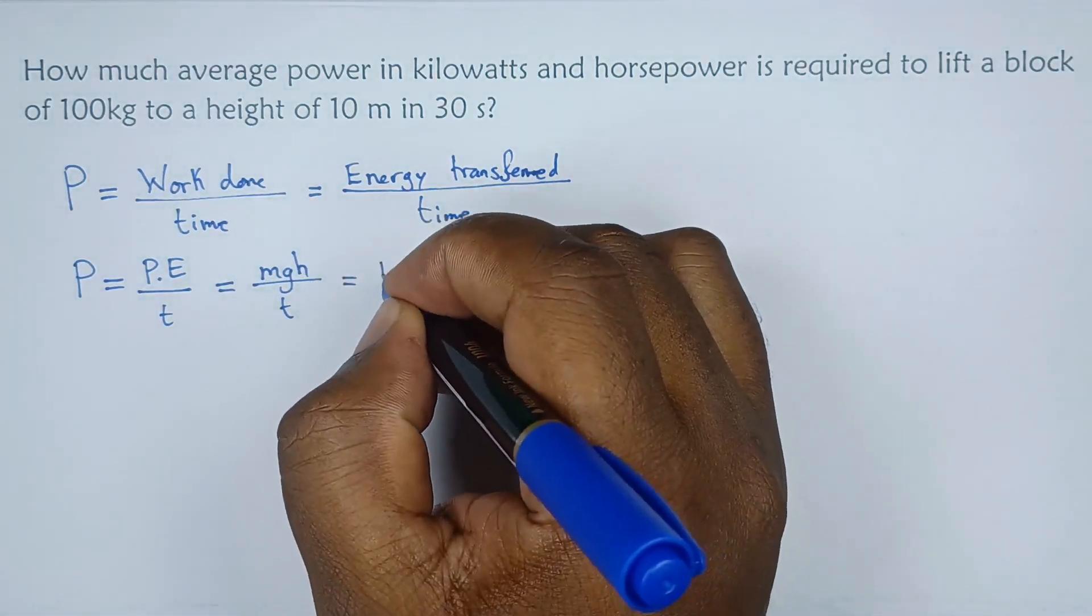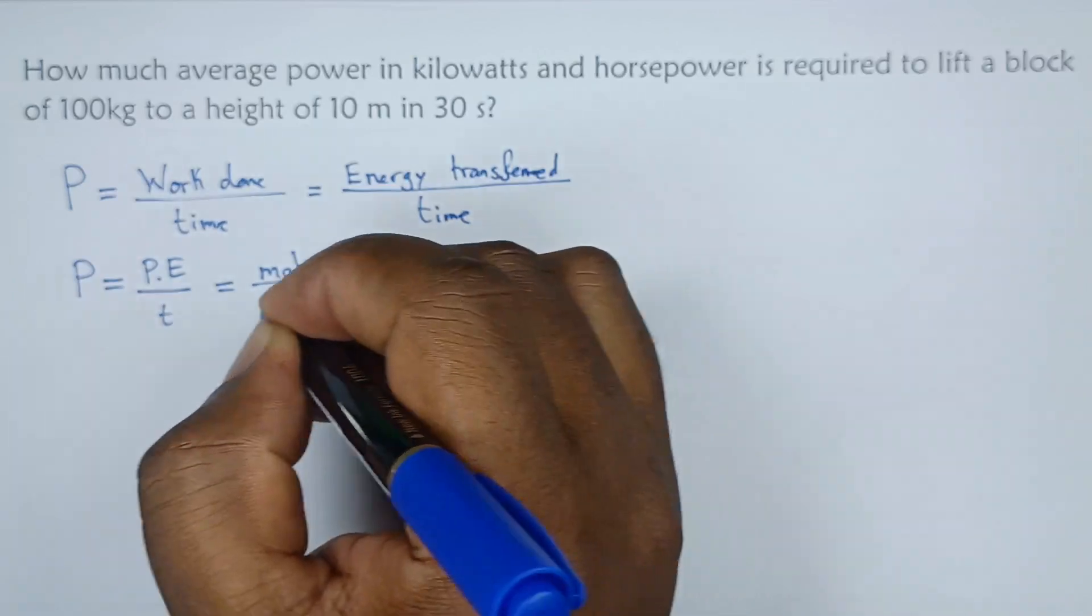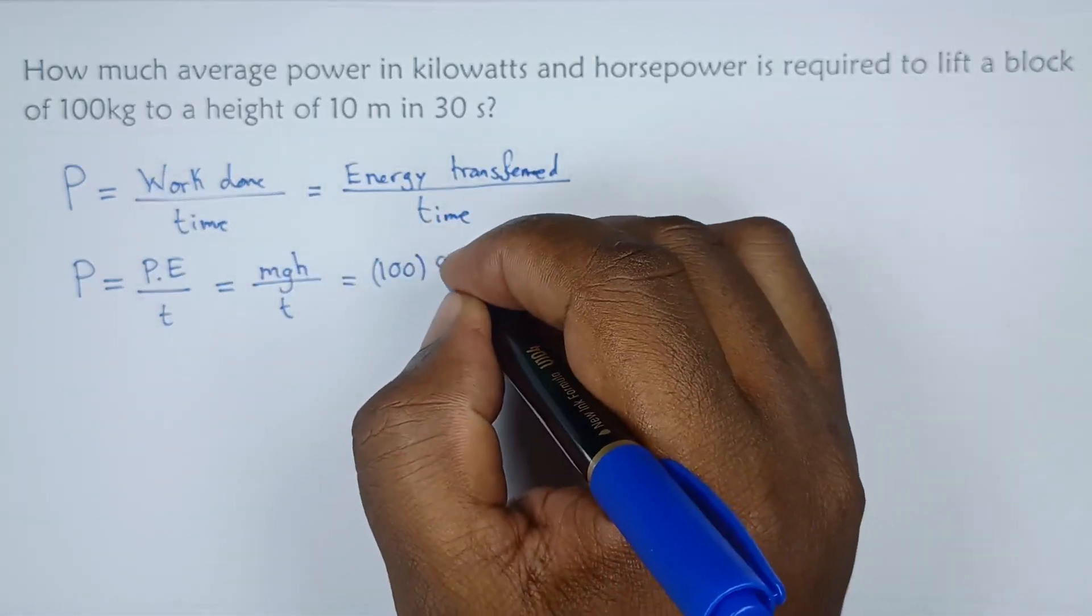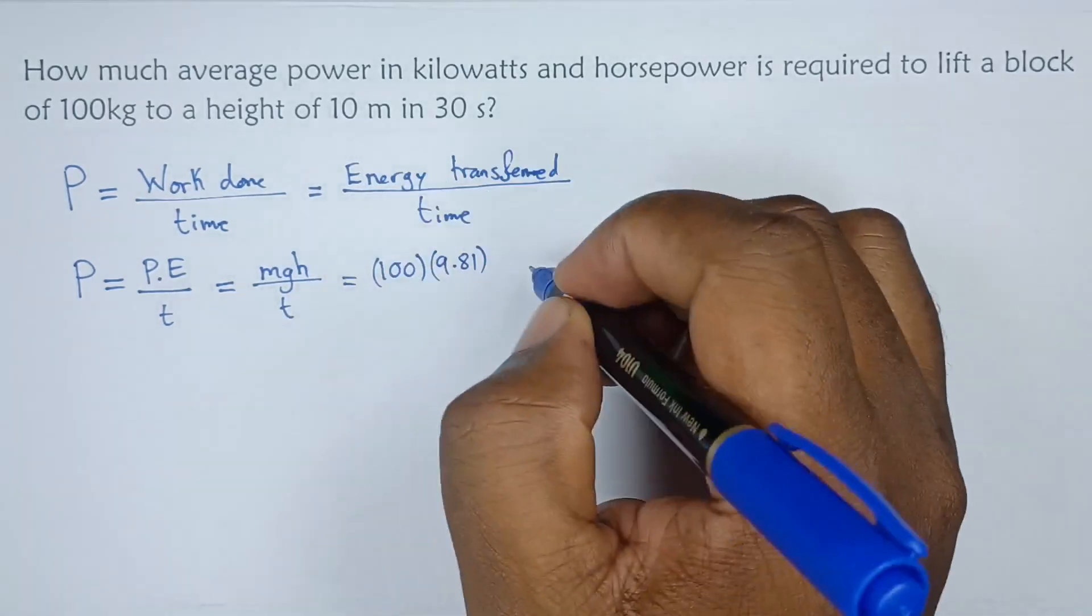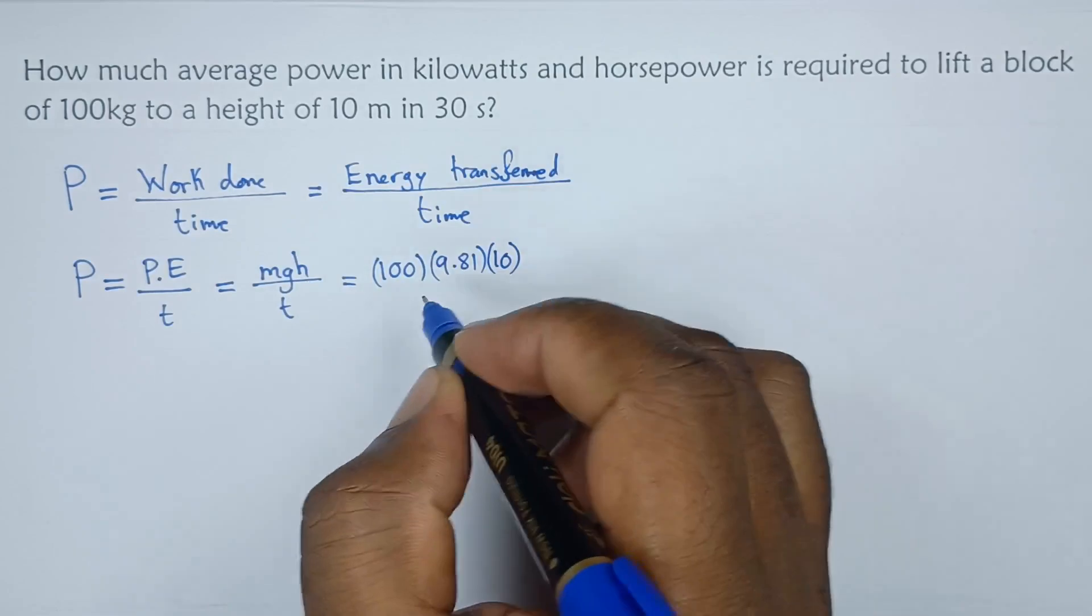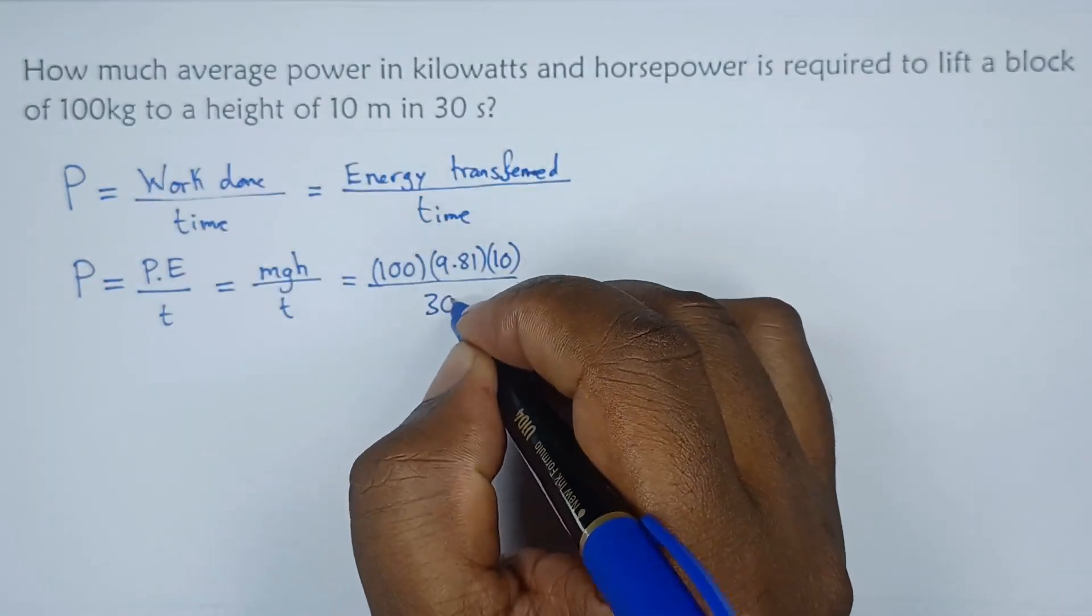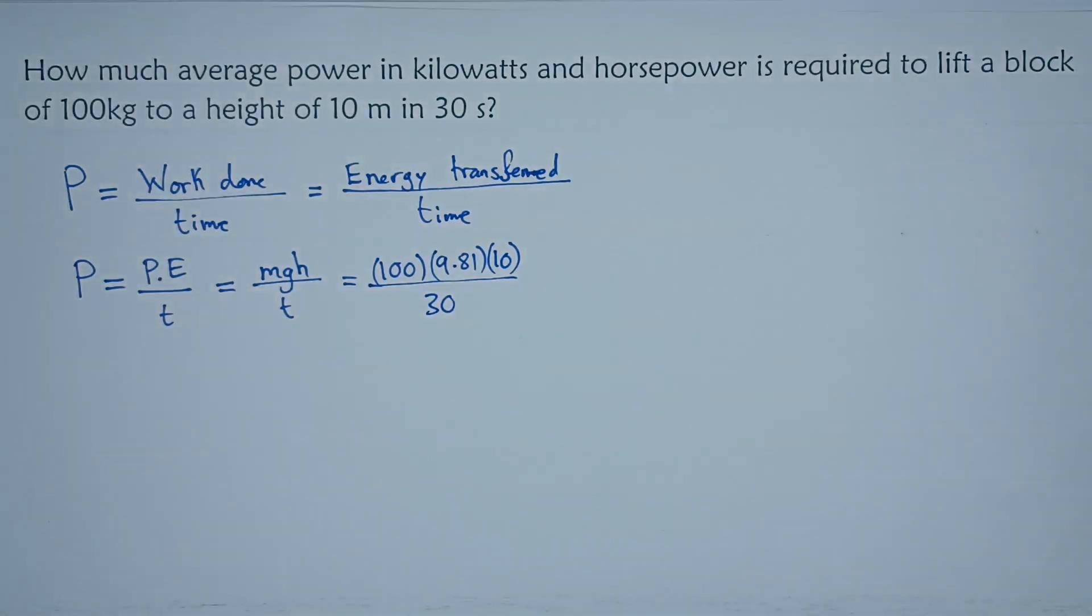So the mass in this case is 100, the acceleration due to gravity we use 9.81, h the height given is 10, and all this is over the time which is 30 seconds. Okay, so if we try to compute this